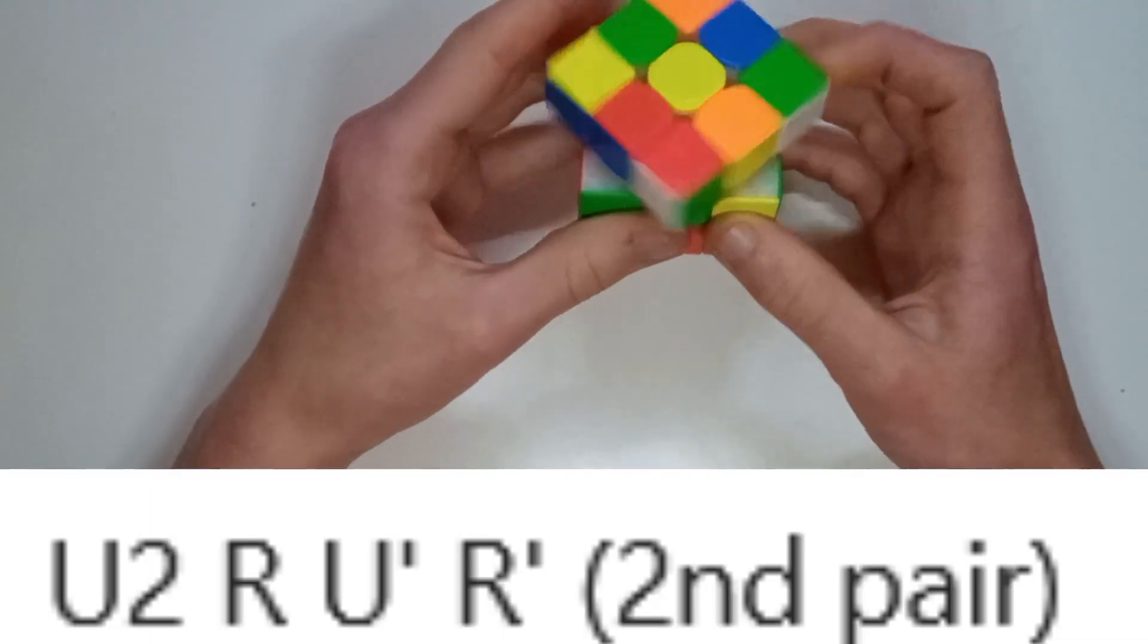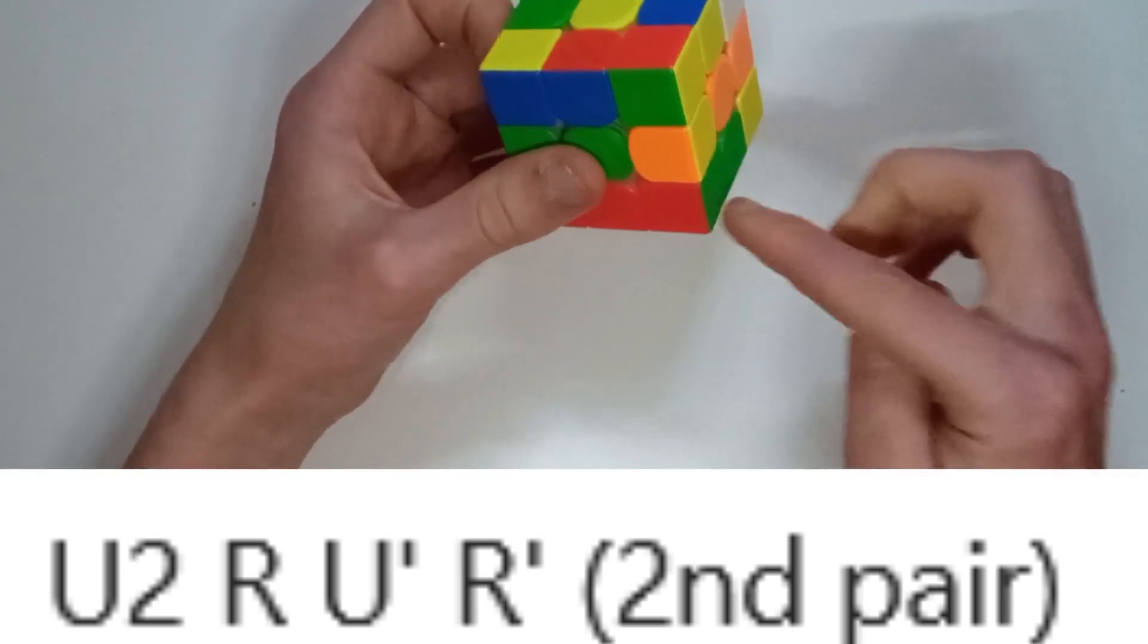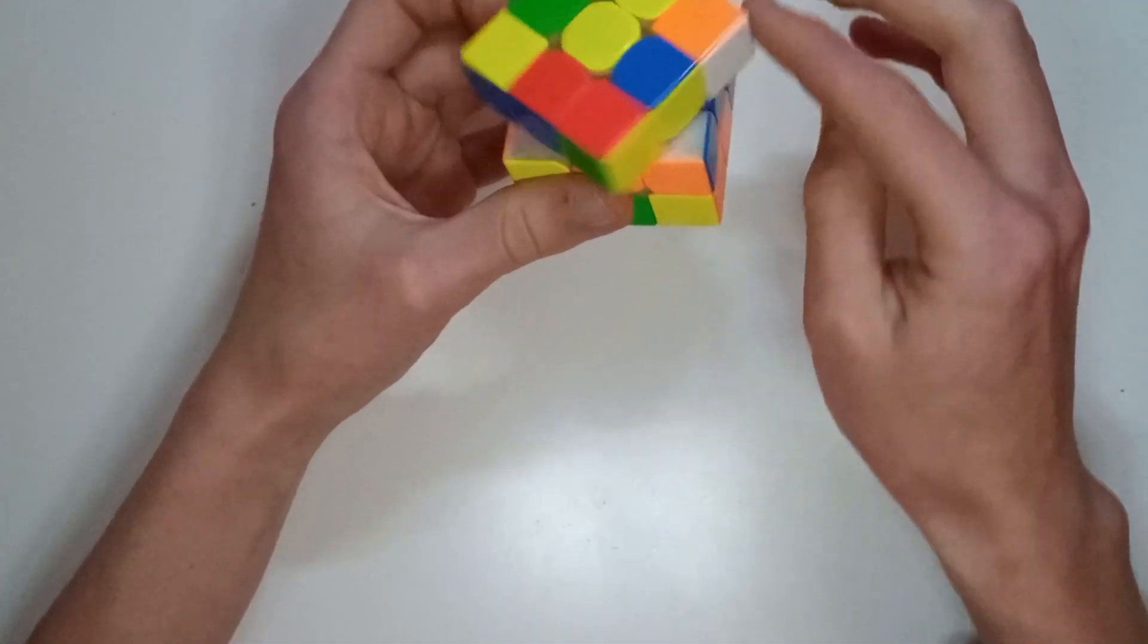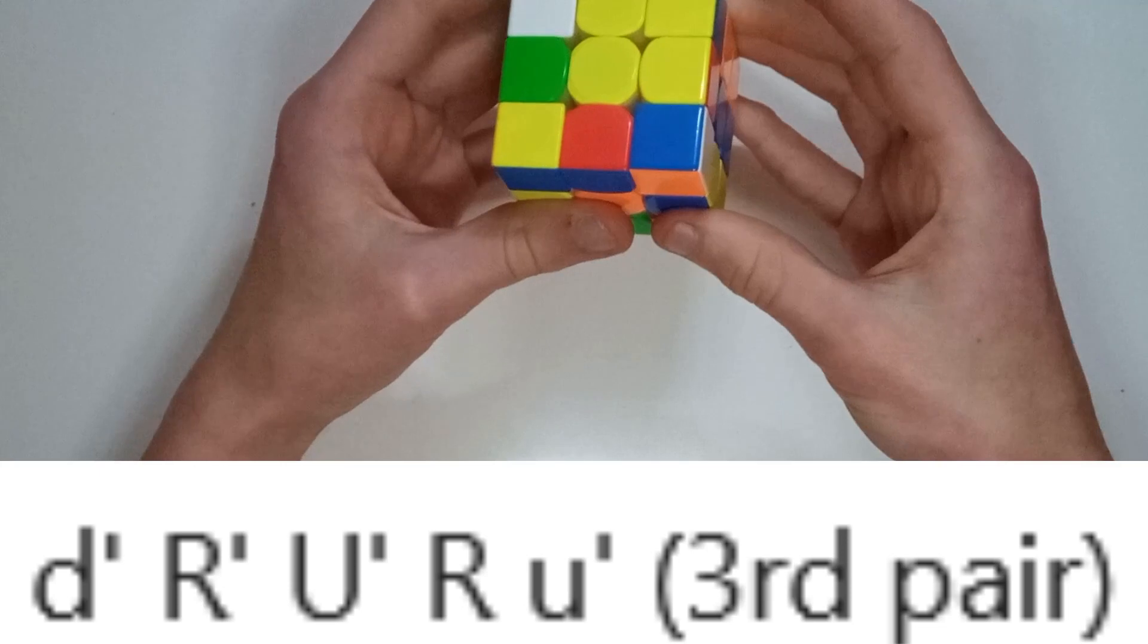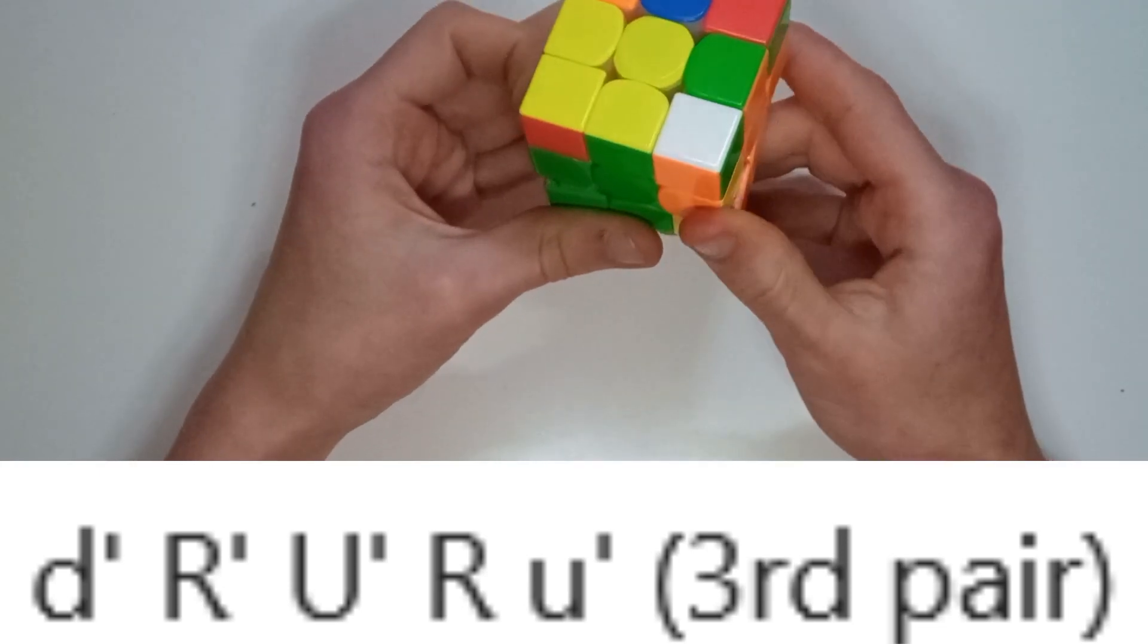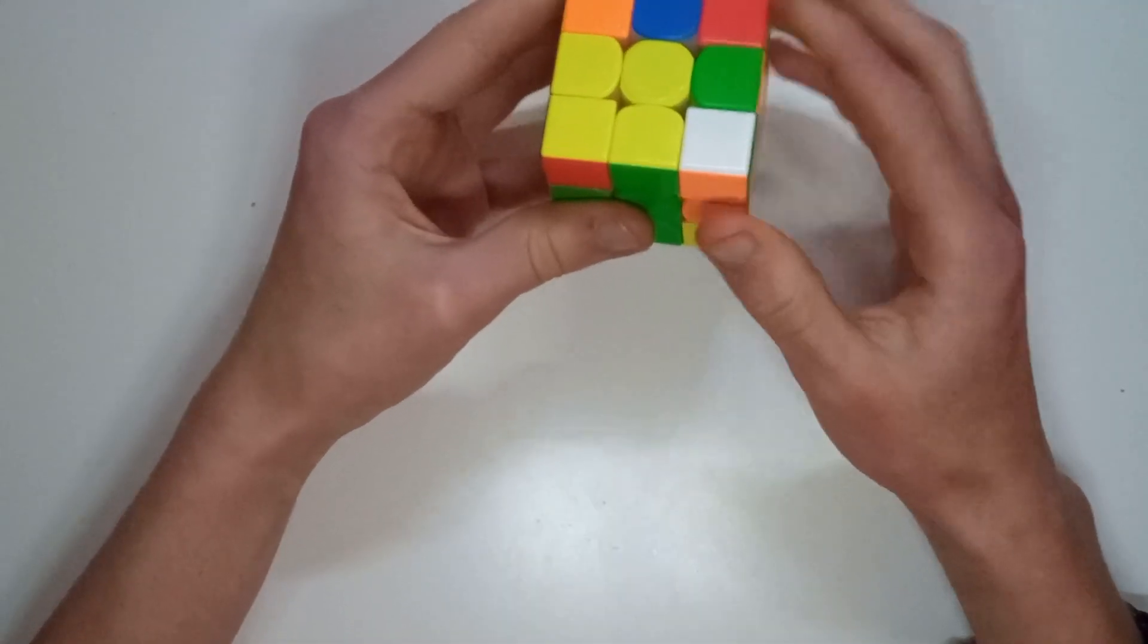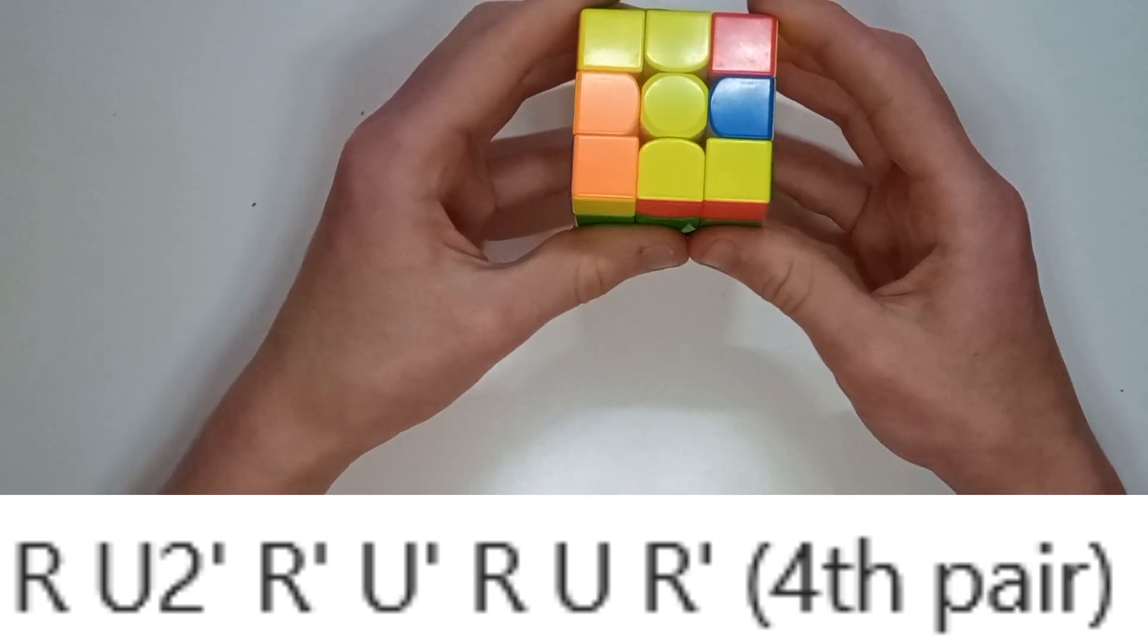So he does U2 R U' R' to get insert that in for that. He's then going to insert these both at the same time here so that he can then align this up with a wide U', do the standard obvious insert here.